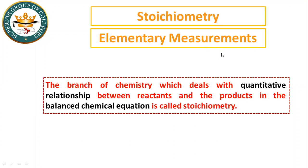Stoichiometry is the branch of chemistry which deals with the quantitative relationship — how many amounts are involved. These are the measurements related to a balanced chemical equation. This is the quantitative relationship between reactants and products in a balanced chemical equation.